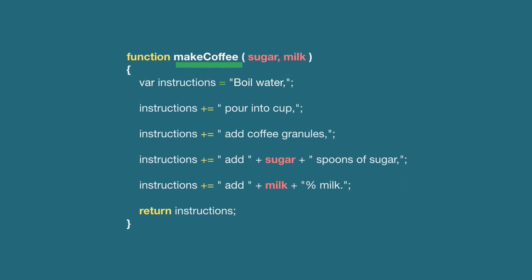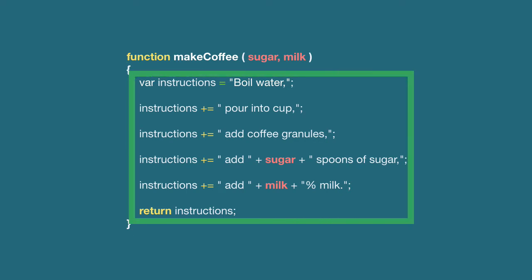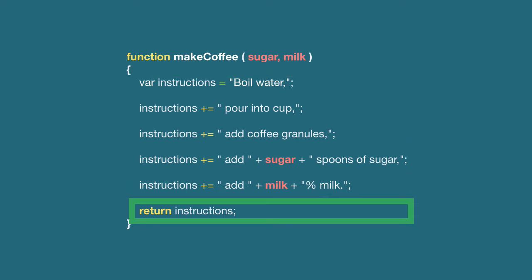Once we've done that, you have the parentheses, and the parentheses define parameters. Parameters are just variables — variables that can have values assigned to them when we execute our instructions. You can have as many parameters as you like. Then you have your curly brackets or braces, and in between those braces you have your set of instructions. These instructions are going to complete that routine, and then you can return something.